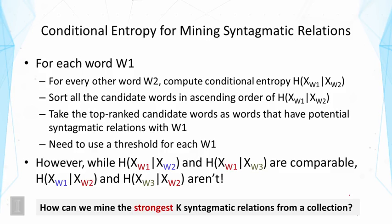However, this algorithm does not help us mine the strongest K syntagmatic relations from the entire collection, because we must ensure that conditional entropies are comparable across different words. When discovering syntagmatic relations for a target word W1, we only need to compare the conditional entropy of W1 given different words W2 or W3 — and in this case they are comparable, since they all measure how hard it is to predict W1. But if we share W2 as the condition and try to predict different words W1 and W3, the conditional entropies are not comparable.